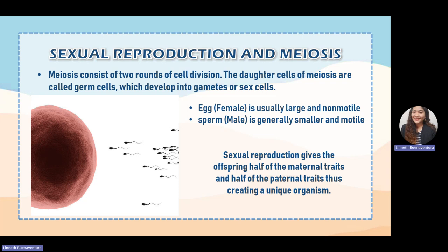Sexual reproduction gives the offspring half of the maternal traits and half of the paternal traits, creating a unique organism. Both egg cells and sperm cells contain 23 chromosomes, known as haploid. Once the sperm fertilizes the egg, the 23 chromosomes from the sperm combine with the 23 chromosomes of the egg to create 46 diploid chromosomes, forming the zygote. That is the process of sexual reproduction through meiosis.